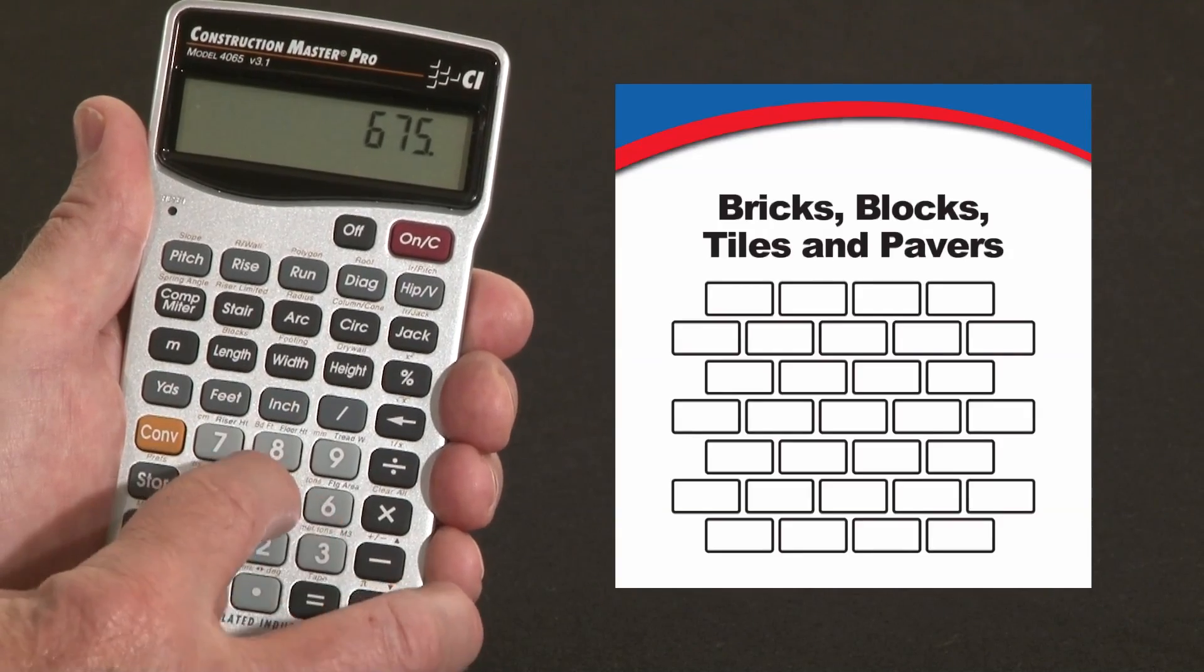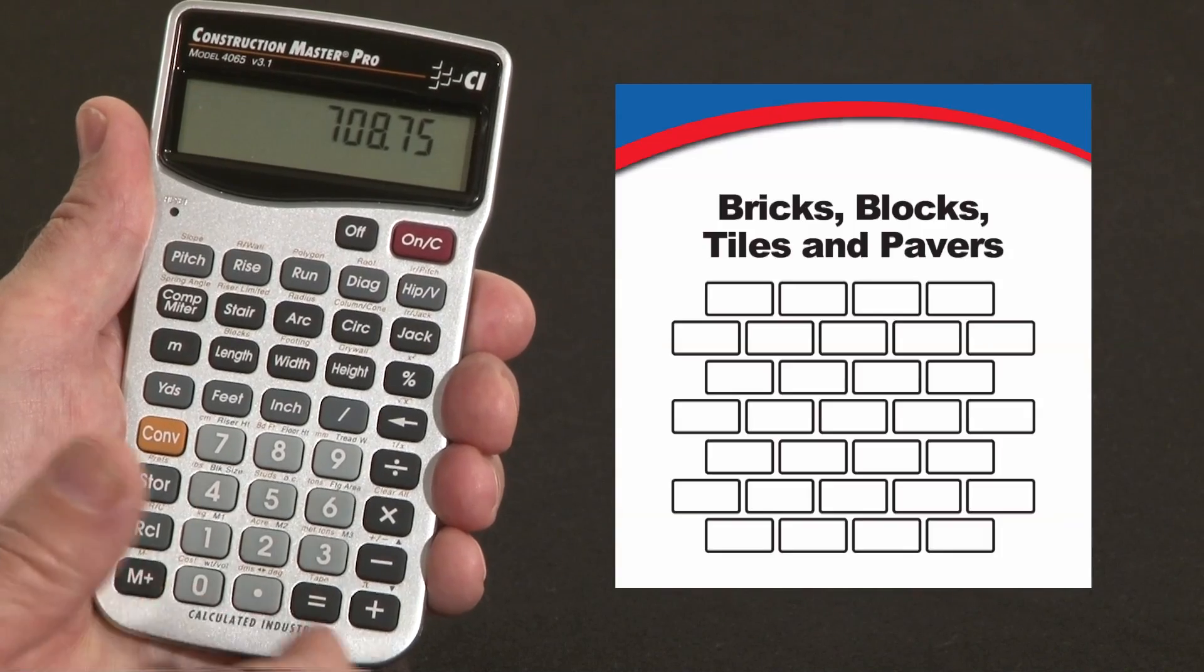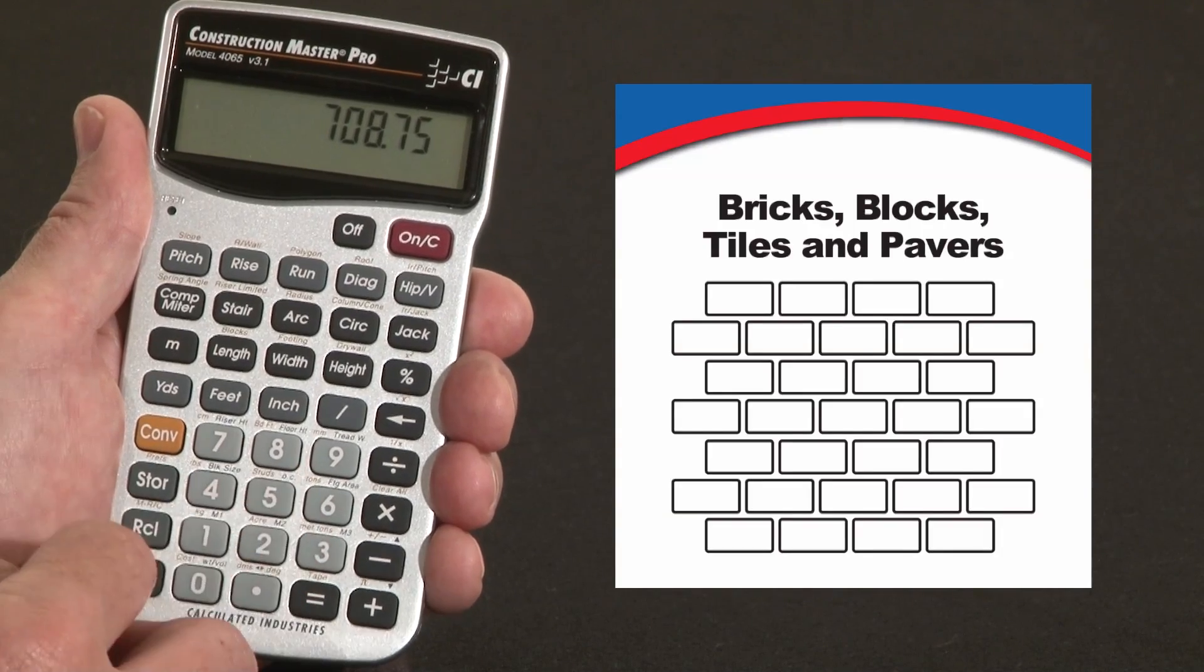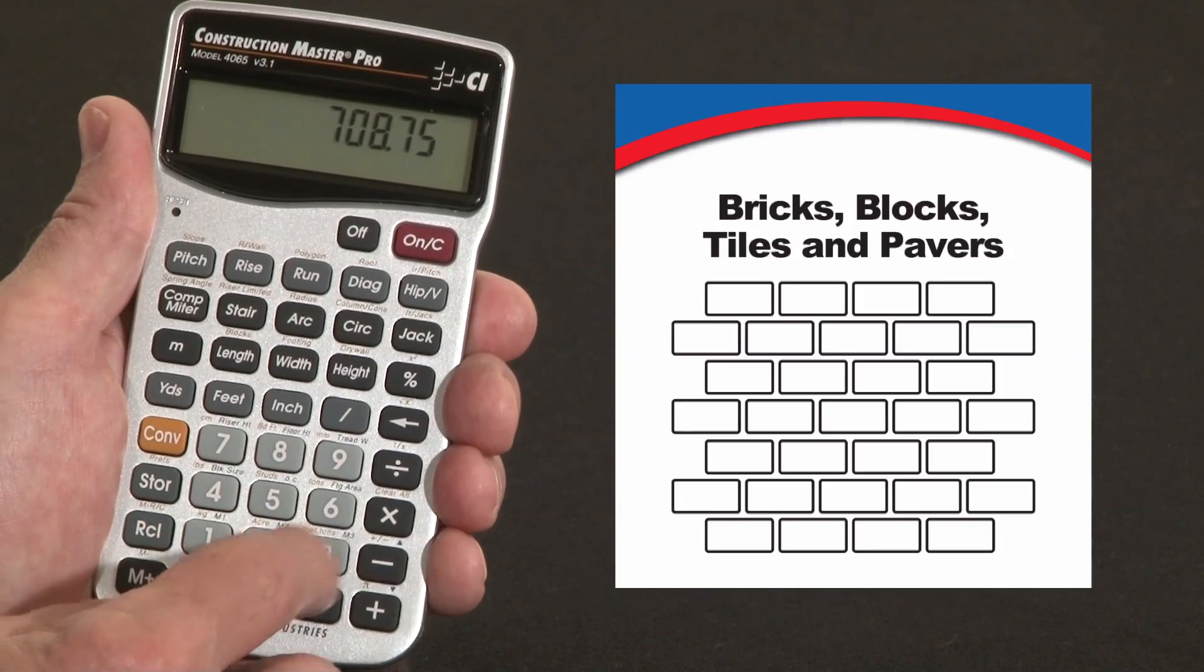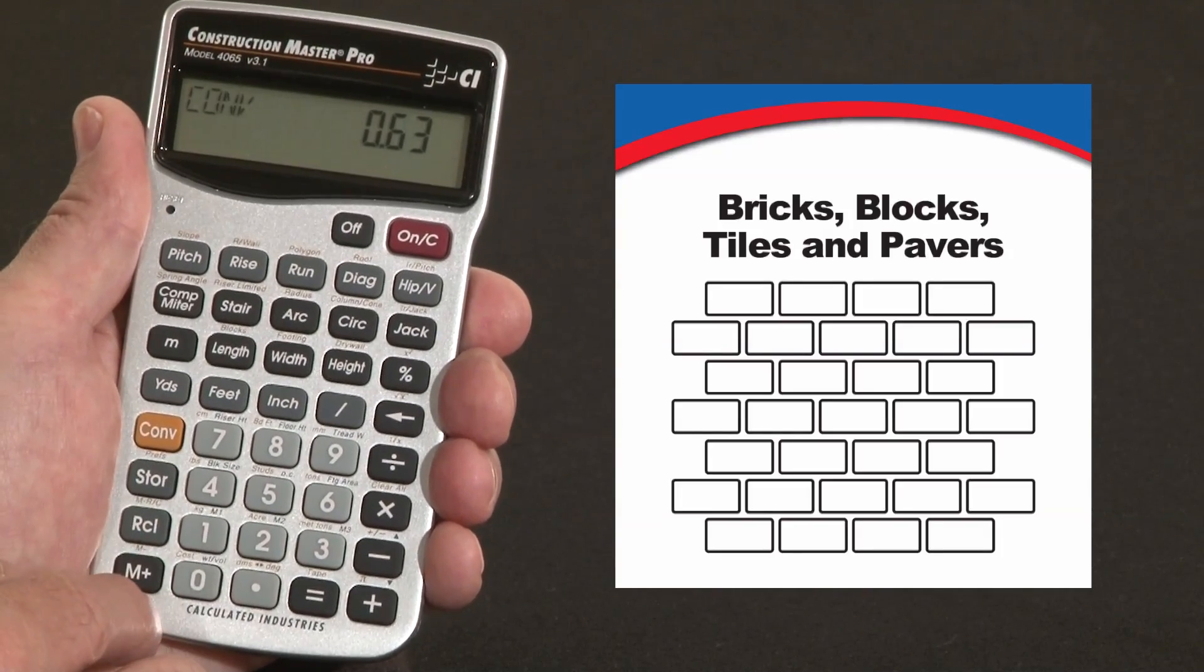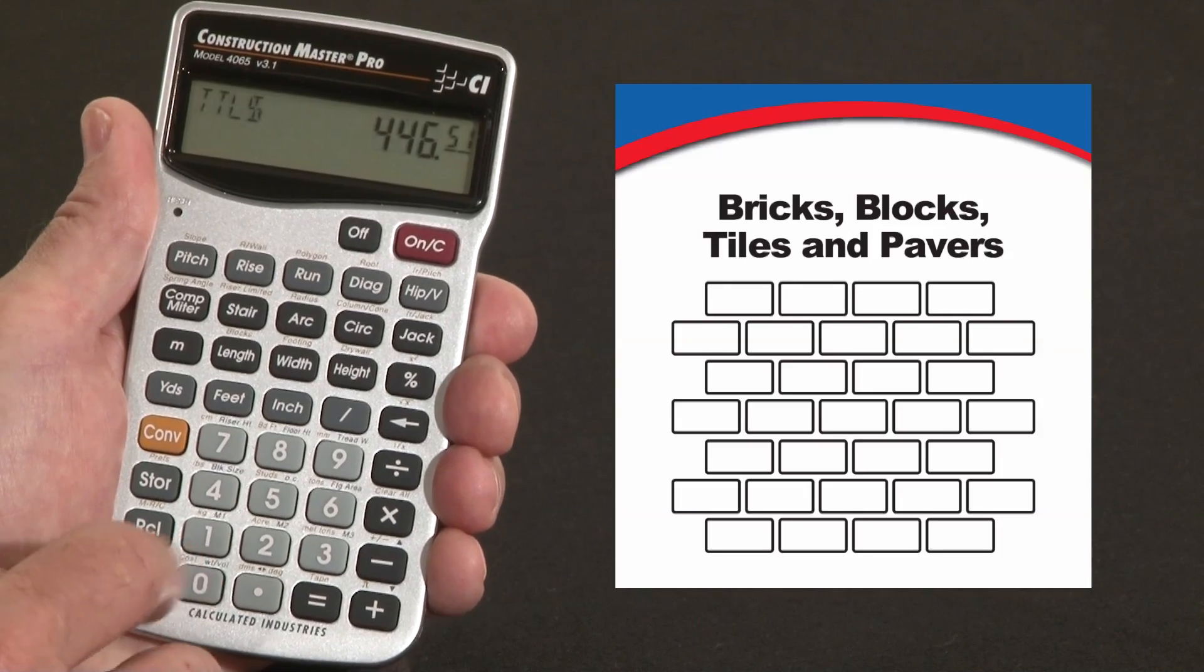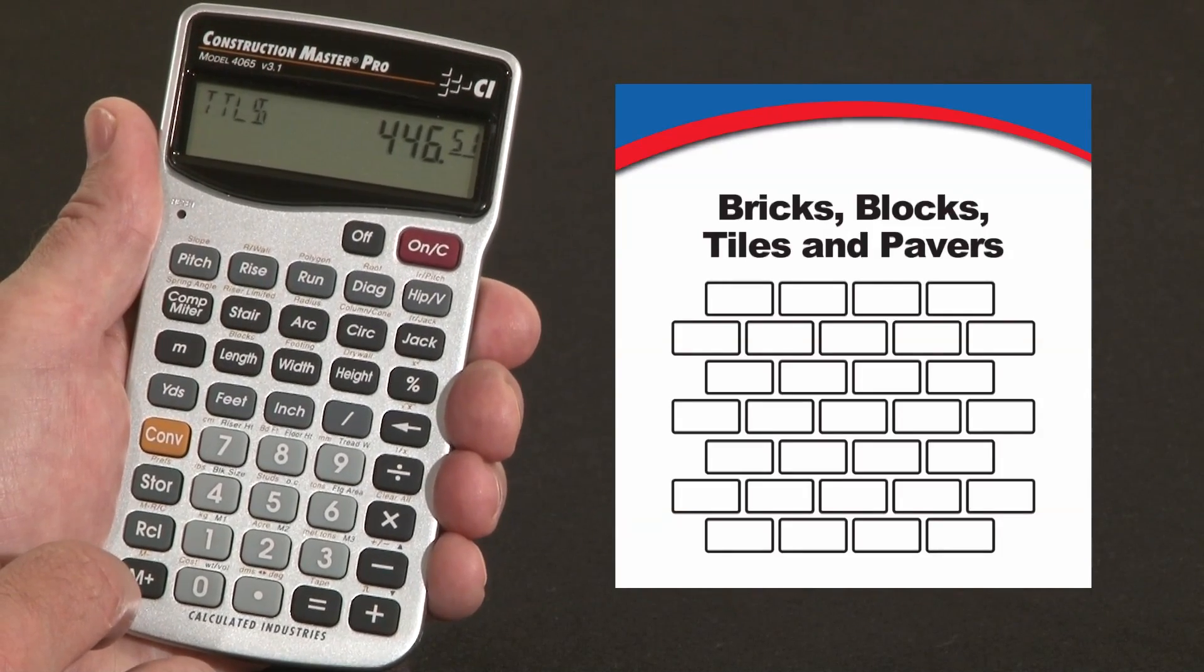Say you might want to add plus 5% for waste, 708 blocks, and then let's say you've got a hot deal on these at 63 cents each at your local home center or building supply yard. Times .63, convert to cost, right over the zero key is cost, so that would be $446 worth of blocks.